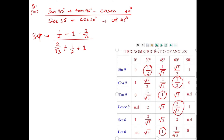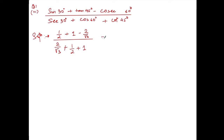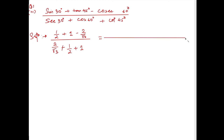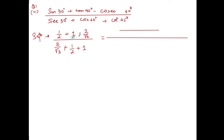Let me remove the table now to have more space. So the expression is: numerator is 1/2 + 1 − 2/√3, and denominator is 2/√3 + 1/2 + 1. Taking LCM of 2 and √3, the LCM is 2√3. Multiply through: root 3 × 1 gives root 3, plus 2√3 × 1 gives 2√3, minus root 3 × 2 gives 4.